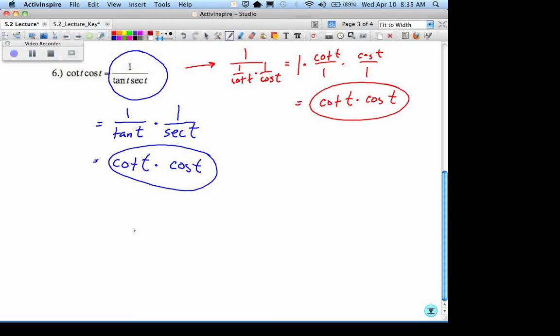So, again, there are different ways. Over here, if you would have circled the left-hand side, you know, circled the left-hand side right here, somebody might have written 1 over tangent times 1 over secant, and then when you multiply them together, you get right there.